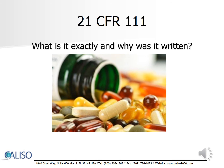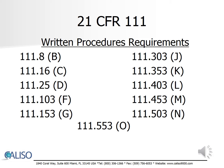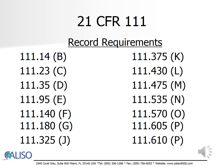21 CFR Part 111 contains the regulations for the Minimum Current Good Manufacturing Practices for Preparation of Dietary Supplements for Human Consumption. This regulation contains 16 subparts with 84 unique requirements. The 11 sections listed here represent the requirements for written procedures specifically identified within 21 CFR Part 111. The 14 sections listed here represent the requirements for records that must be kept and maintained.